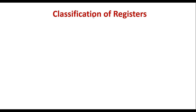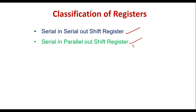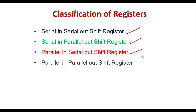Registers are classified as: serial in serial out shift register, serial in parallel out shift register, parallel in serial out shift register, and parallel in parallel out shift register. Thus, there are four types of shift registers.